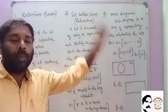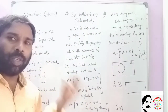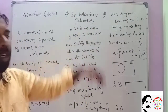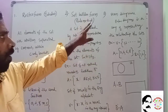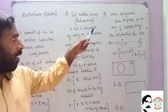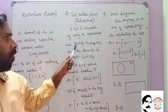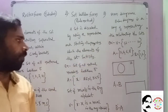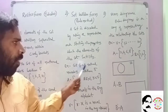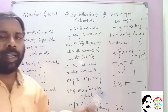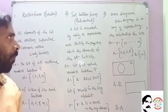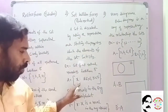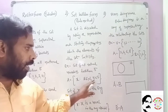The next important topic is Set Builder Form, also called the Rule Method. In Set Builder Form, a set is described by using a representative element and stating the properties which the elements of the set satisfy. For example, the set of all natural numbers less than 5 in Set Builder Form is written as: the set of X such that X belongs to N and X is less than 5.